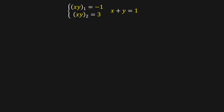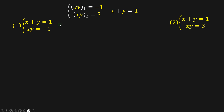So we have two systems of equations. The first one is: x plus y equals 1 and xy equals negative 1. Or the second one: x plus y equals 1 and xy equals 3.